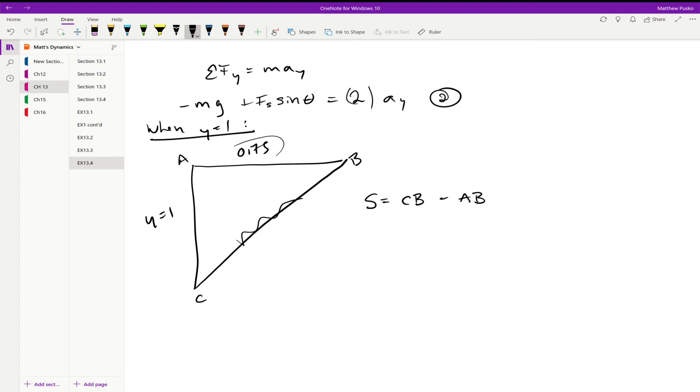Okay, well CB would be equal to the square root of y squared, which is one in our case, plus 0.75. Let's do one plus 0.75 squared, and then AB we know is 0.75, so we get S equal to 0.5 meters, and that is the amount of stretch that the spring undergoes.